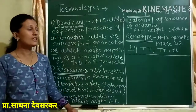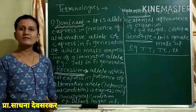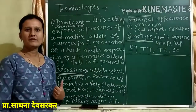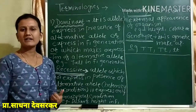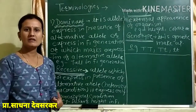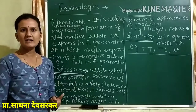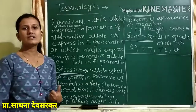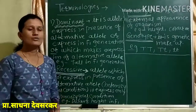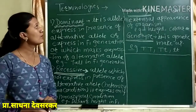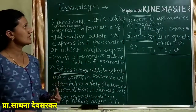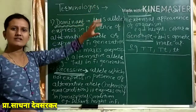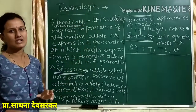Hello students. Yesterday we learned some definitions: factor, character, gene, allele, and trait. These five definitions we learned yesterday. Today we will learn some more definitions — the terminologies used in genetics, used in inheritance and variations.